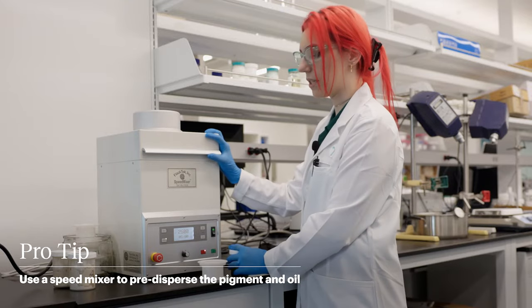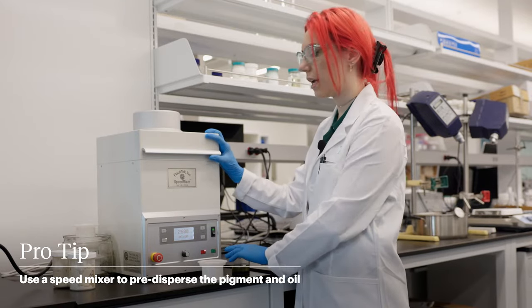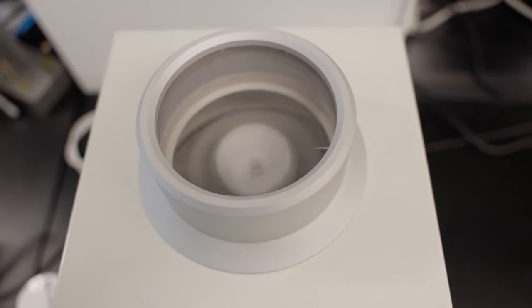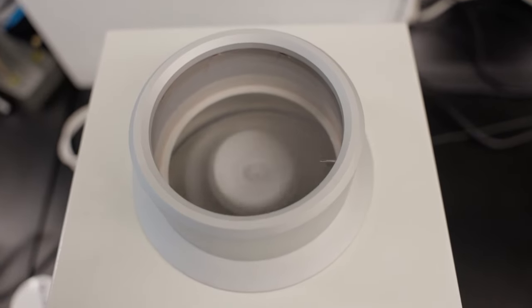So the next step is to use the Speed Mixer to mix our pigments together, and we'll just pop this in, close it, and we're going to start this at 2,500 RPM for about five minutes.